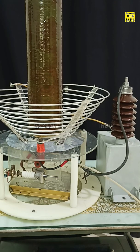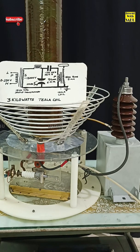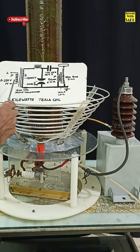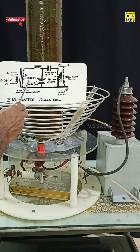This is my 3 kilowatt spark gap Tesla coil and I will show you the circuit diagram. The main part is a step up transformer, primary 230 volts and secondary 15000 volts.